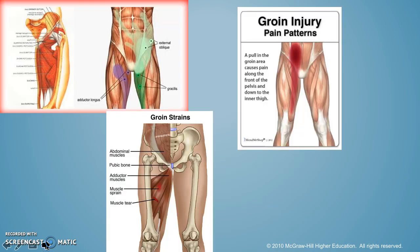Here are some groin injury pain patterns. You can see it can go all the way up into your belly, down into your leg. You can see the gracilis pattern right over here, the adductor longus here, and this would be an oblique. Lots of different things can be considered the groin, but the groin is not a muscle — it is a group of muscles.